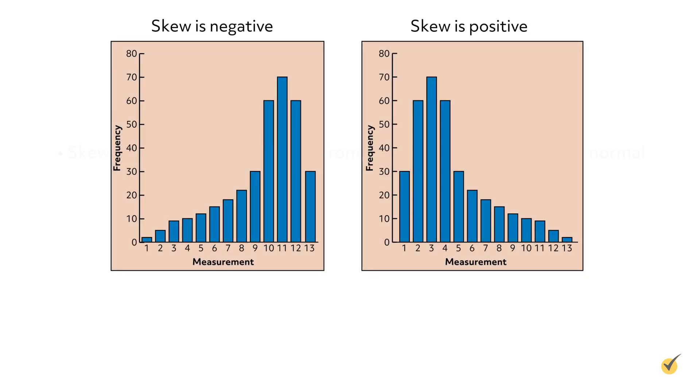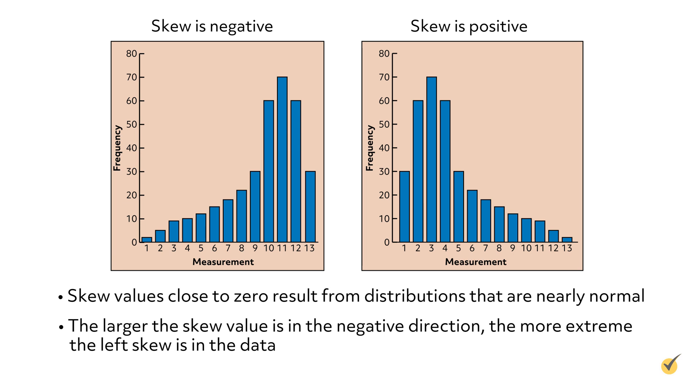The size of the sample should be kept in mind when interpreting a skew value. As with all statistics, a larger sample size generates more reliable results. In general, skew values close to zero result from distributions that are nearly normal. The larger the skew value is in the negative direction, the more extreme the left skew is in the data.